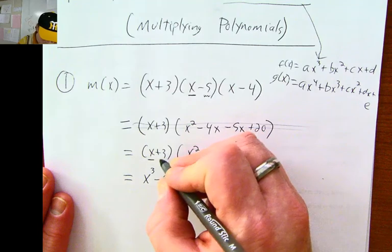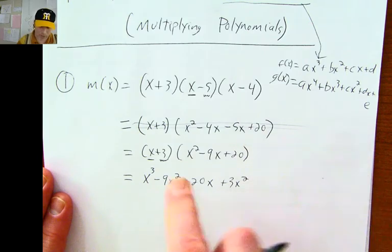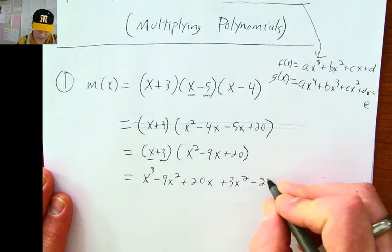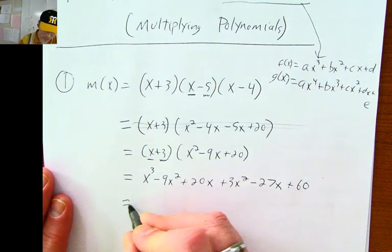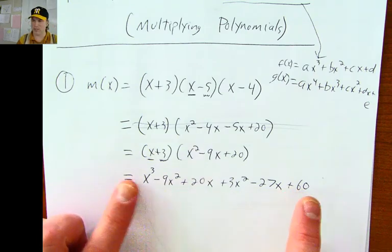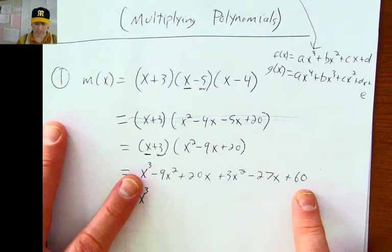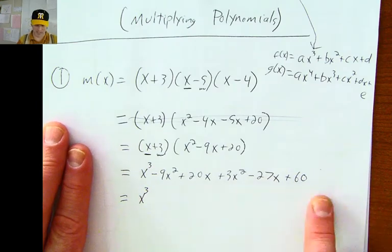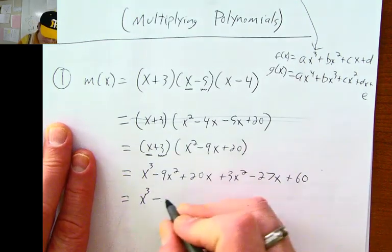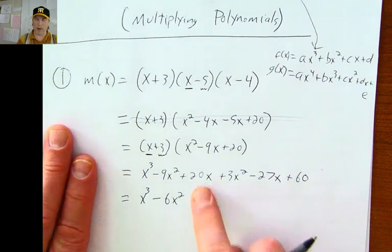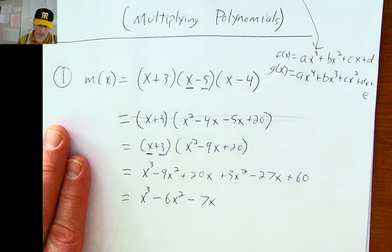Next, I'm going to distribute this positive three. Positive three times x squared is plus three x squared. Positive three times negative nine is negative twenty seven x, and positive three times twenty is sixty. Now I can add up the like terms. Negative nine x squared and positive three x squared is negative six x squared, and positive twenty x and negative twenty seven x is negative seven x, and then plus sixty.